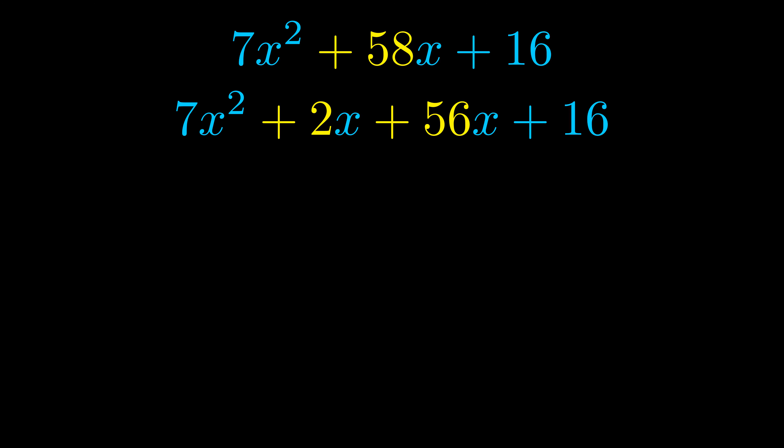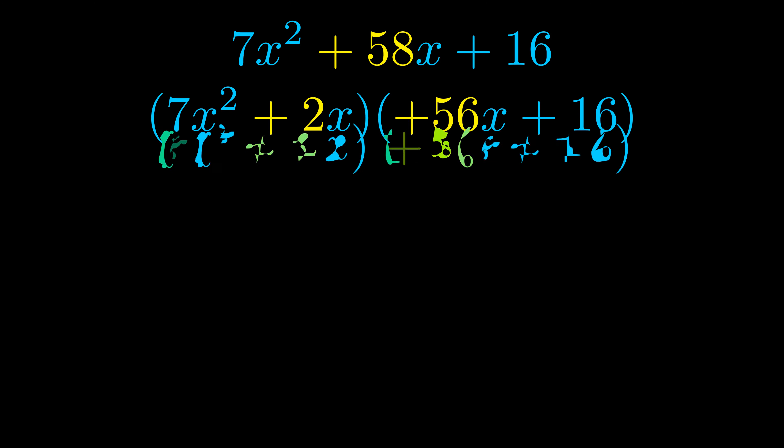Once we've done this we go ahead and we put parentheses around the first term and the last term and we do that so that we can take the greatest common factor out of both terms. We can see the greatest common factor is now outside in green. Notice also how what remains inside of the parentheses is the same in both cases. The blue values are the same.